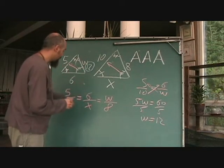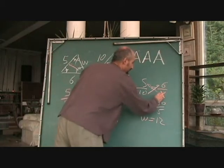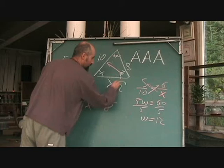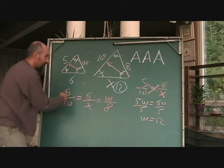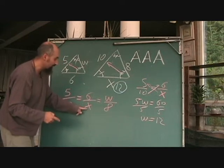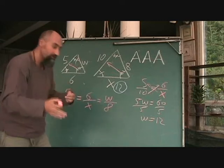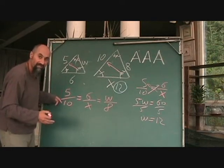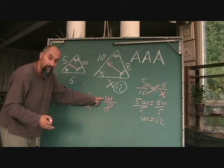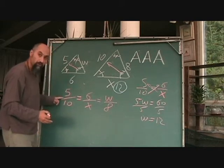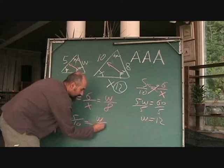Now you want to solve for x — you solved for x, now solve for w. Use the right symbols in the right places. To avoid carrying errors from one calculation to the next, use the original numbers they gave you instead of your calculated values. If you made a mistake earlier, the subsequent answer will also be wrong. So go back to the original: 5 over 10 is equal to w over 8.